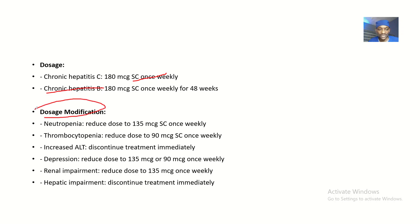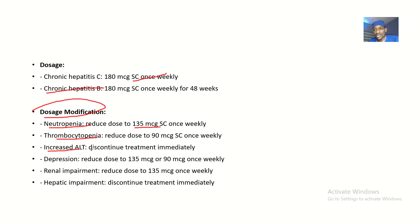For dosage modifications: for people who have neutropenia, you should adjust the dose from 180 down to 135. For people who have thrombocytopenia, you should adjust the dose to 90. For people who have increased alanine transaminase levels in the body, you should discontinue the treatment immediately.